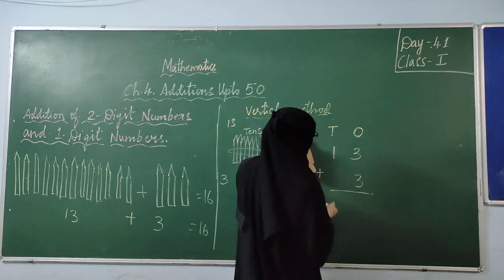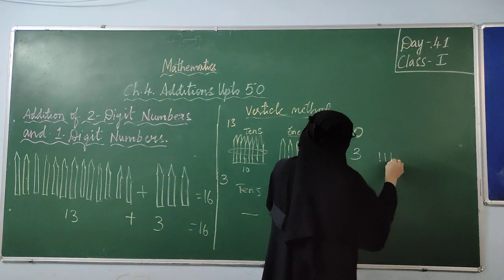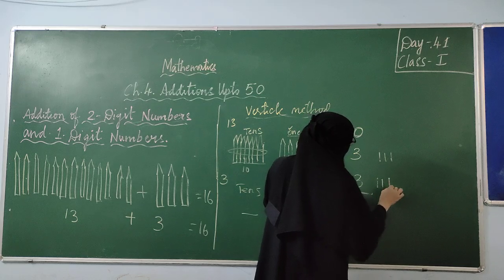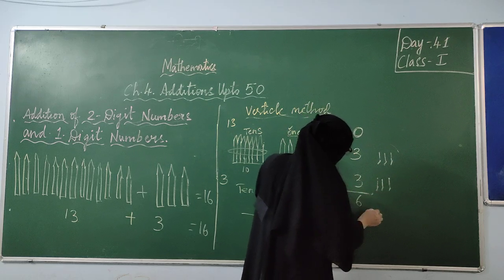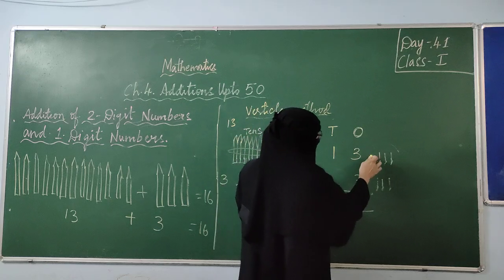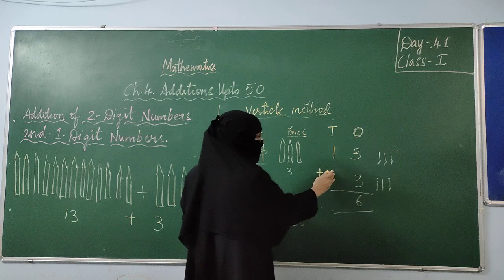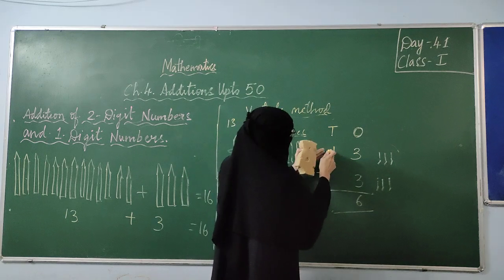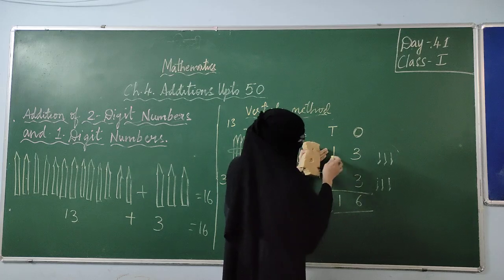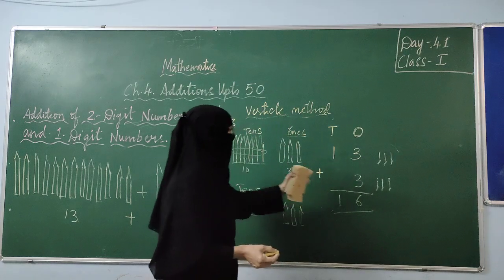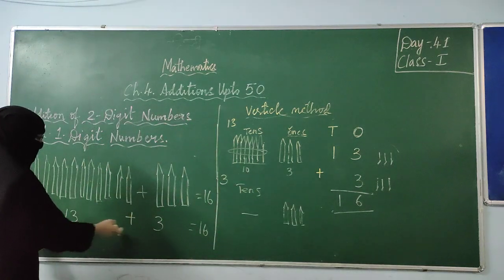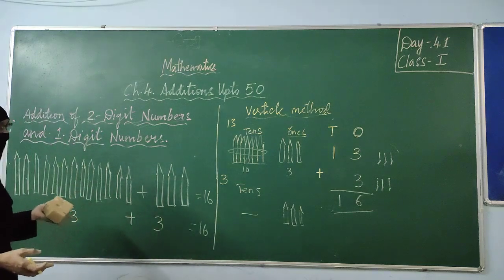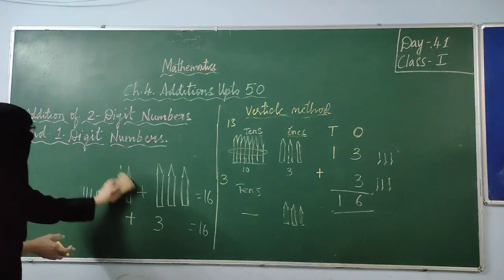Now I get the vertical method set up. I have to keep my addition symbol. Now, what I have to do? Add the ones: 3 plus 3 equals 6. Here, the tens row number — no number to add — so I bring this 1 down. The answer is 16. So, if you add 13 plus 3 you get 16. That is the vertical method. 13 plus 3 equals 16. This is also the horizontal method result. I will show you some more sums using the vertical method.